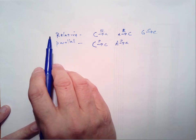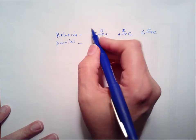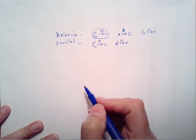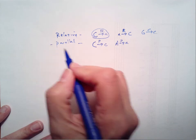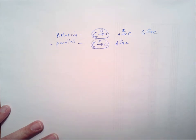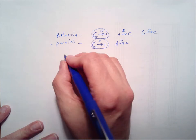Once again, relative, these two have the same key signature but they have different tonics. Parallel, these two have the same tonic but have different key signatures. Now we're going to add to this the concept of closely related.